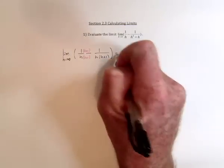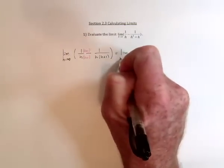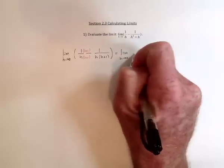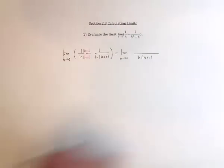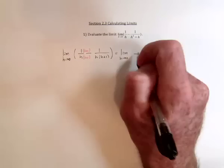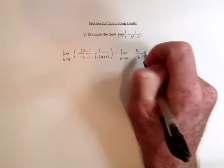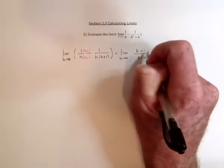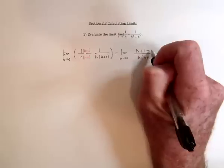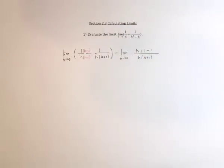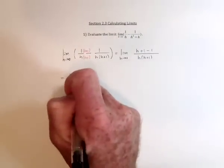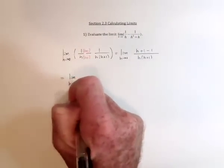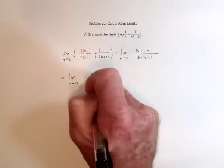And then they've got a common denominator. So we can just make one fraction with h times h plus 1 as the common denominator. And then here we've got an h plus 1 and then minus 1. And those ones are going to cancel each other out, leaving only an h in the numerator.